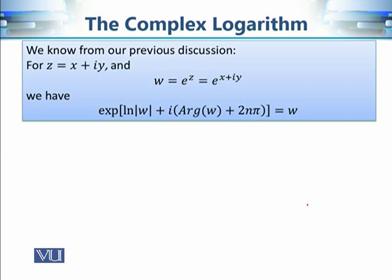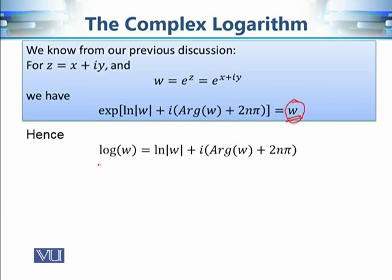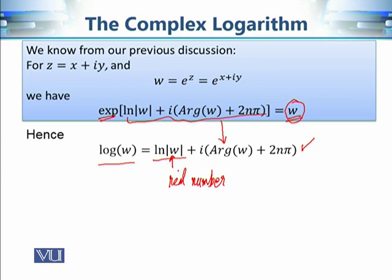Let's find the exact image of some element w under the complex logarithm. Since it is defined as the inverse of the exponential function, we use the exponential function definition. Applying log on both sides, log and exponential cancel each other. This gives one way of defining the logarithmic value of any complex number w: it is the natural log of the modulus of w — which is a real number — plus the argument of w.